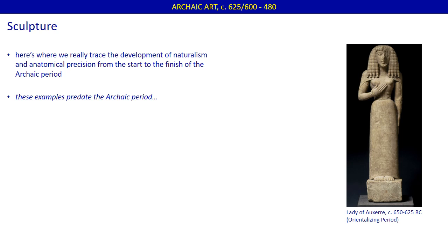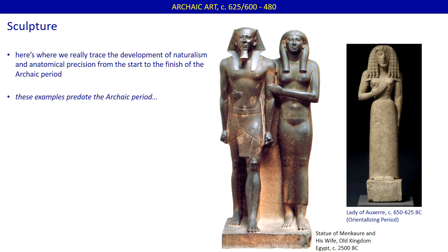A starting point would be the Lady of Auxerre, which we viewed as an example of late orientalizing art often called Daedalic. Look carefully at the statue of Menkauri and his wife from Old Kingdom Egypt, almost 2000 years before the archaic era in Greece. We have already discussed how Greek sculpture used Egyptian models as a point of departure. However, we also observed that the Egyptian rendering of the human figure was more detailed and anatomically correct, even at a time much earlier. We noted that much more of the female body was revealed beneath the drapery, and the very rigid tight-fisted pose of the Egyptian male statue would certainly be directly passed on to Greek sculpture.